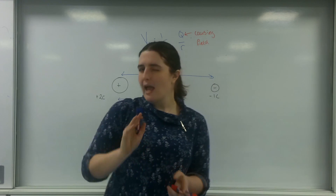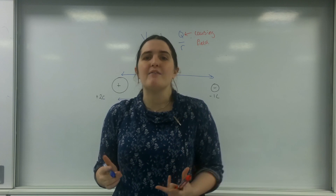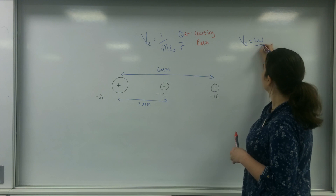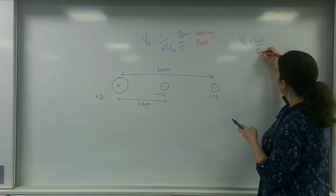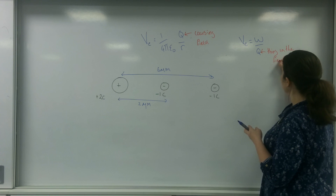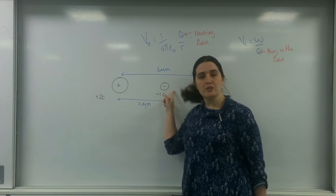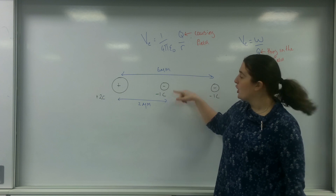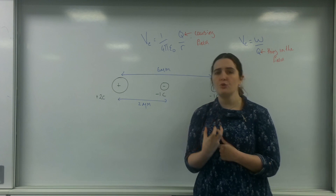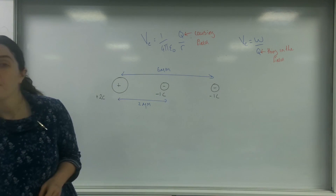If I wanted to know how much energy an object is given, or needs to be given, to leave the field, I would be using this formula here. This Q here is the thing in the field. What I'm going to do today is find how much energy it's going to take to move this minus 1 coulomb charge from this position in the field to this other position.